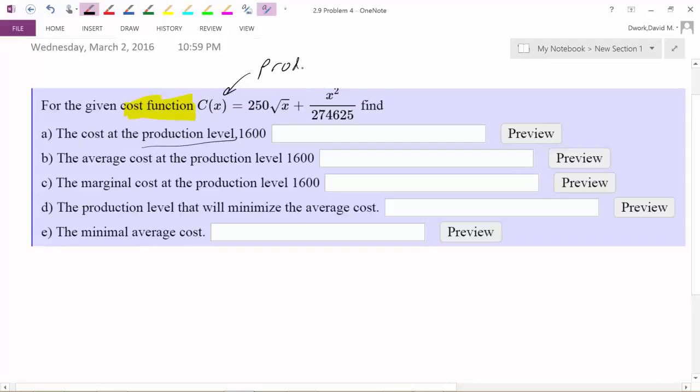So the X represents the number of units that's being produced, the number of units that are being made. So here we go.